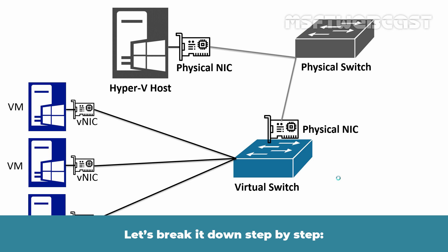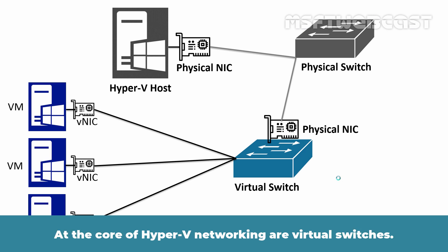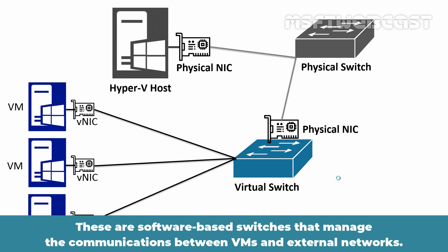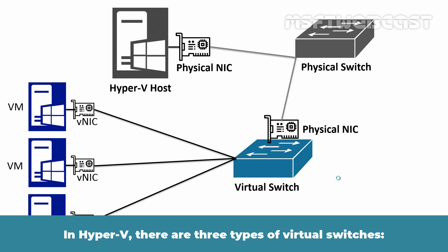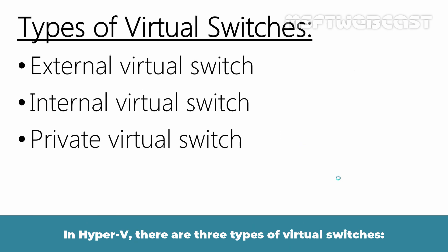Let's break it down step by step. At the core of Hyper-V networking are virtual switches. These are software-based switches that manage communications between VMs and external networks. In Hyper-V, there are three types of virtual switches: external, internal, and private virtual switches.